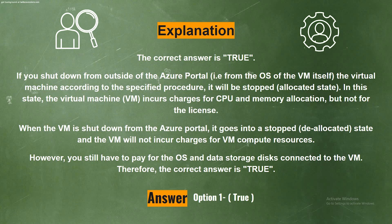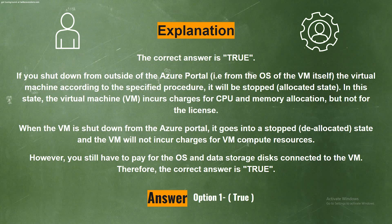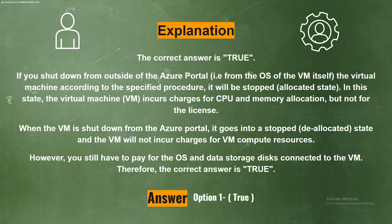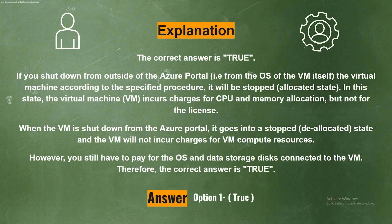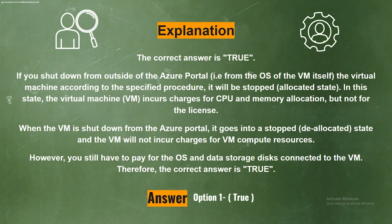Explanation. The correct answer is True. If you shut down from outside of the Azure portal — that is, from the OS or the VM itself — the virtual machine will be stopped. In this state, the virtual machine incurs charges for CPU and memory allocation but not for the license. When the VM is shut down from the Azure portal, it goes into a stopped state and will not incur charges for VM compute resources. However, you still have to pay for the OS and data storage disks connected to the VM. Therefore, the correct answer is True.